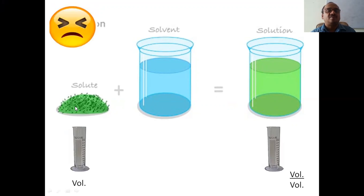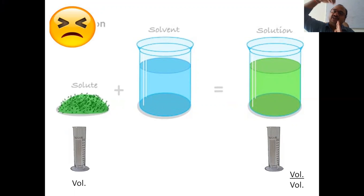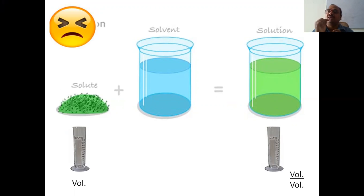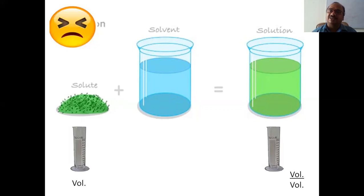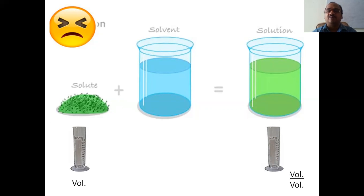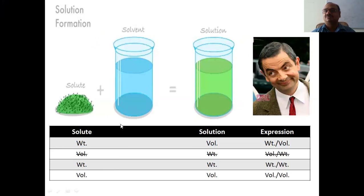Another expression: the solute — I don't go for weight, I don't want the weighing machine. I will use only the measuring jar. I will take the solute powder and keep it in the measuring jar and measure the volume — 1 ml, 2 ml, or 3 ml. The solution also I measure only using volumetric glassware. So I express in volume by volume — both are volumes.